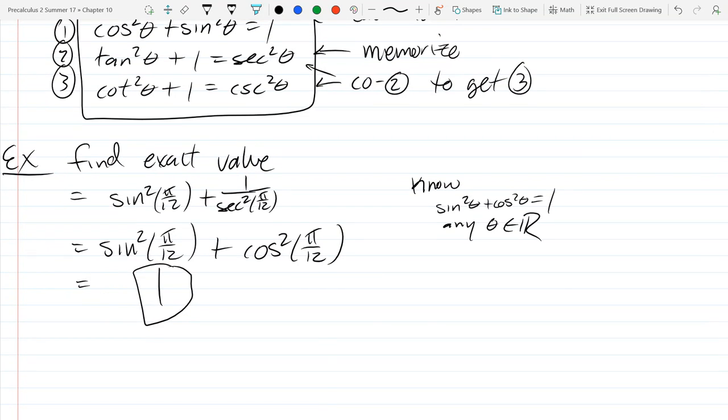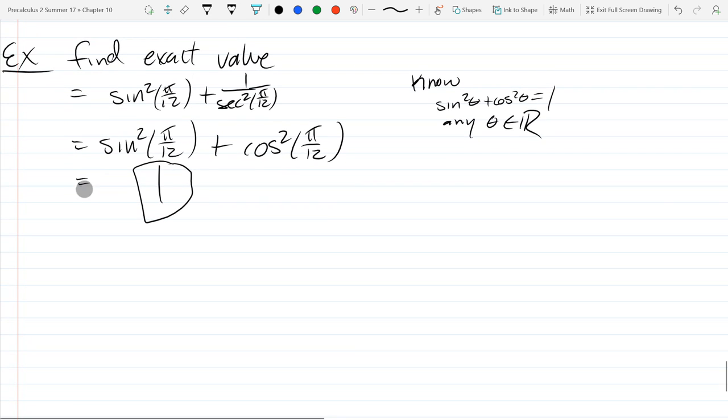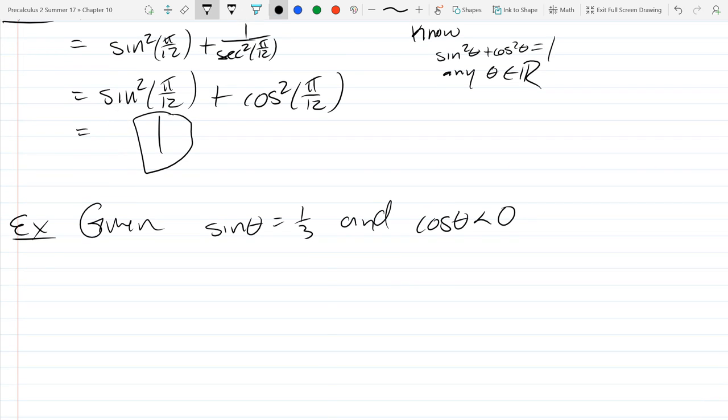Now we're going to do some more. We're going to use the same properties, but we're going to look at a more geometric approach. So our next example: given sine theta is one third and cosine theta is negative, find exact values of cosine and tangent.